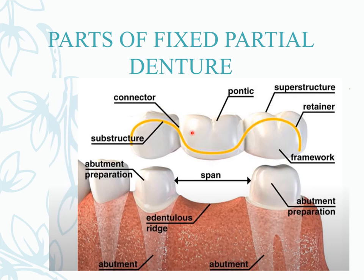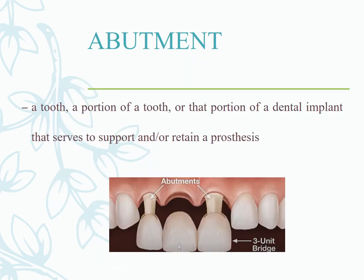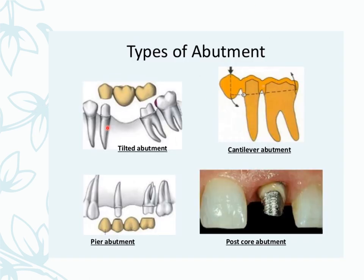In a fixed partial denture, the pontic replaces the missing tooth, the retainer covers the abutment teeth, and the connector joins the two. An abutment is a tooth or portion of a dental implant that serves to support or retain the prosthesis. Types of abutments include tilted abutments, cantilever abutments, pier abutments, and post-and-core abutments.